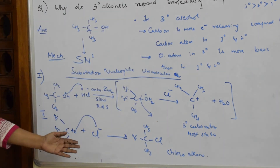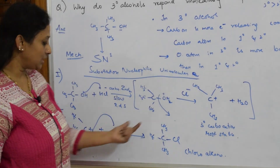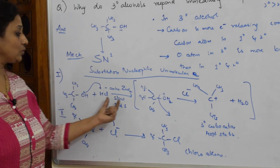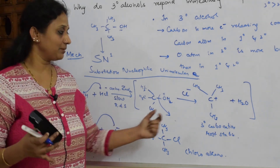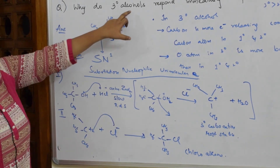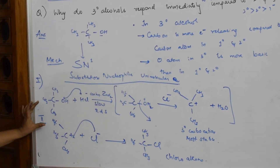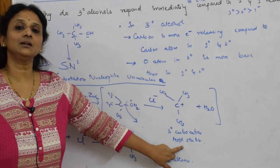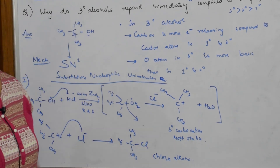This is the reason why the response of tertiary alcohol to Lucas test is immediate — quick, while shaking — because of the formation of the stable tertiary carbocation. Whenever this question is asked, explain these two reasons, write the mechanism, and show that because of the formation of a stable tertiary carbocation, the reaction is faster. Thank you for watching.